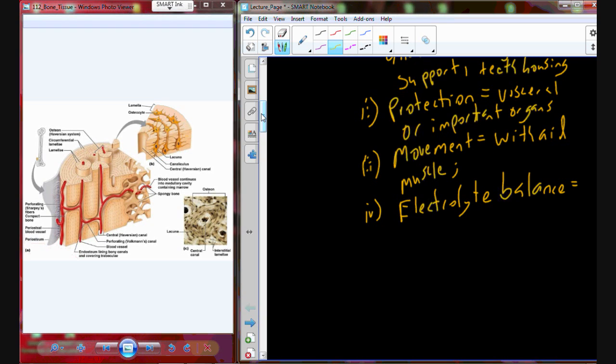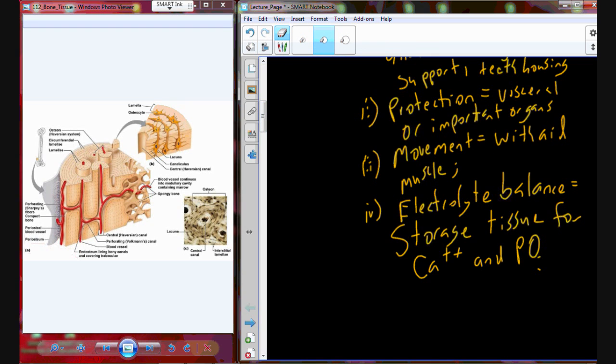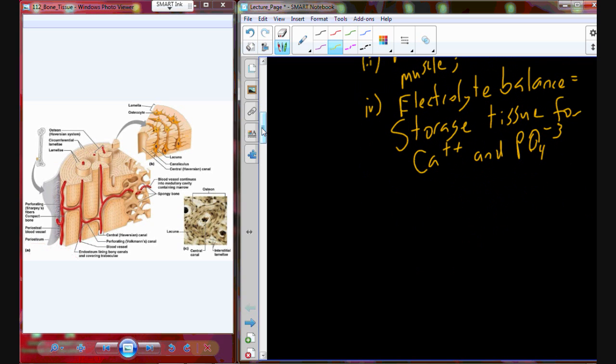The skeletal system is also going to provide electrolyte balance. The bones are really good sites of storage for calcium and for phosphate. If we need calcium, which at times we do, we can call it out of the bone, out of storage.